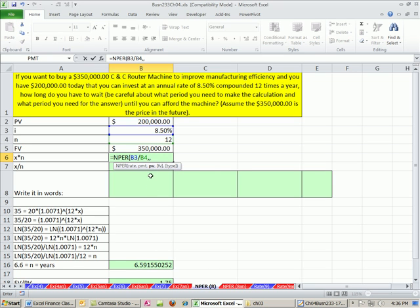Present value, we have, and this has got to be a negative, right? Because we're putting it into the bank, comma.